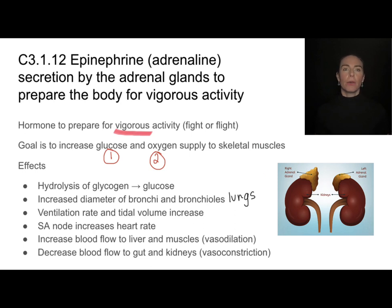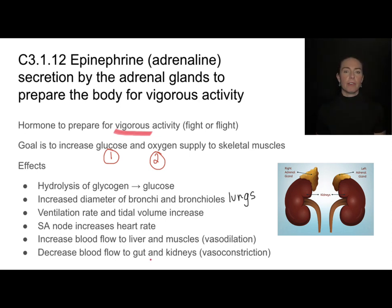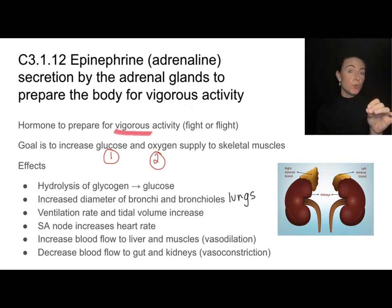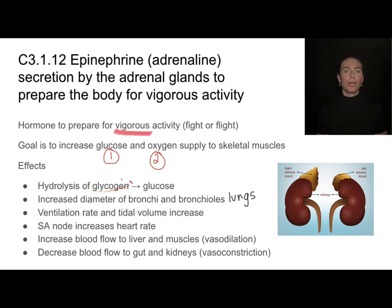We also go through a series of vasoconstriction — lessening blood flow — and vasodilation — increasing blood flow — very purposely to different parts of the body. We want to decrease blood flow to the gut and kidneys, which are important for digestion and filtering, but we don't need that in the moment of fight or flight. What we do need is more blood supply going to our muscles and our liver. The liver is where a lot of our glycogen is stored, so if we're cutting up glycogen into glucose, we send blood to the liver, it picks up that glucose, and carries it to the muscles.